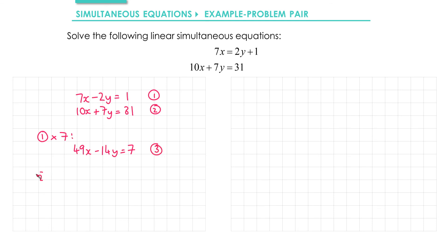Then I'm going to take equation 2 and we're going to multiply it by 2. That gives me 20x plus 14y equals 62, and we'll call that equation 4.